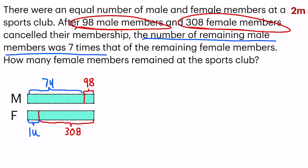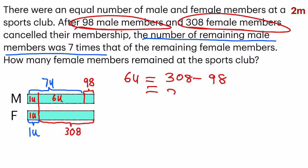So now let's draw a comparison between male and female. This would be one unit. And how many units would there be inside this portion? Seven minus one unit — there would be six units. So if you take a look at this six units, it's actually the difference of 308 and 98.